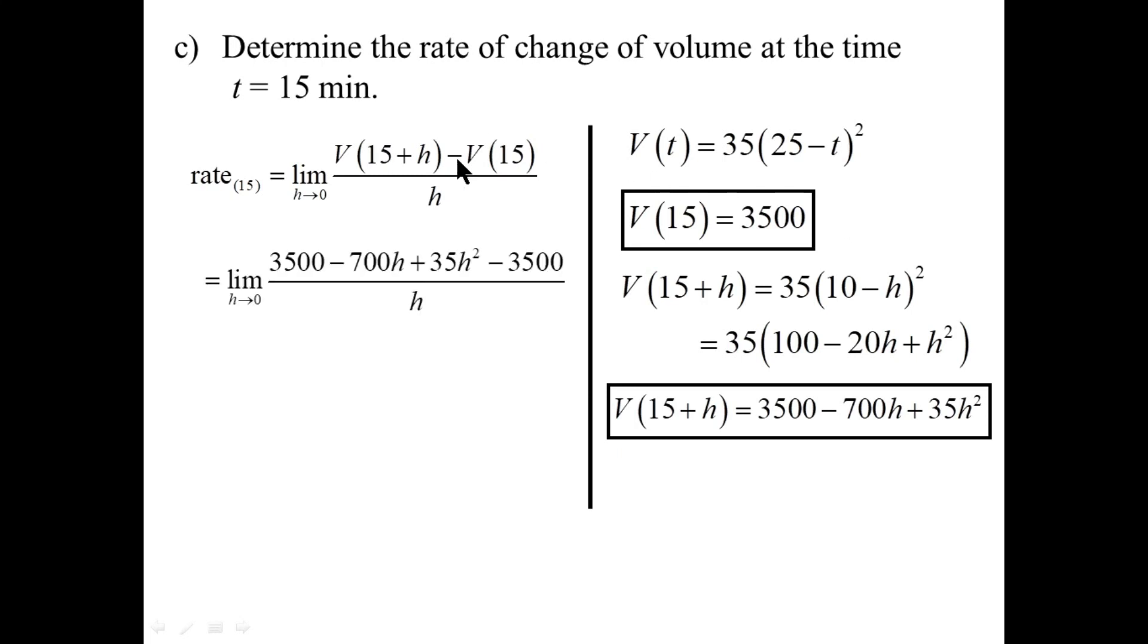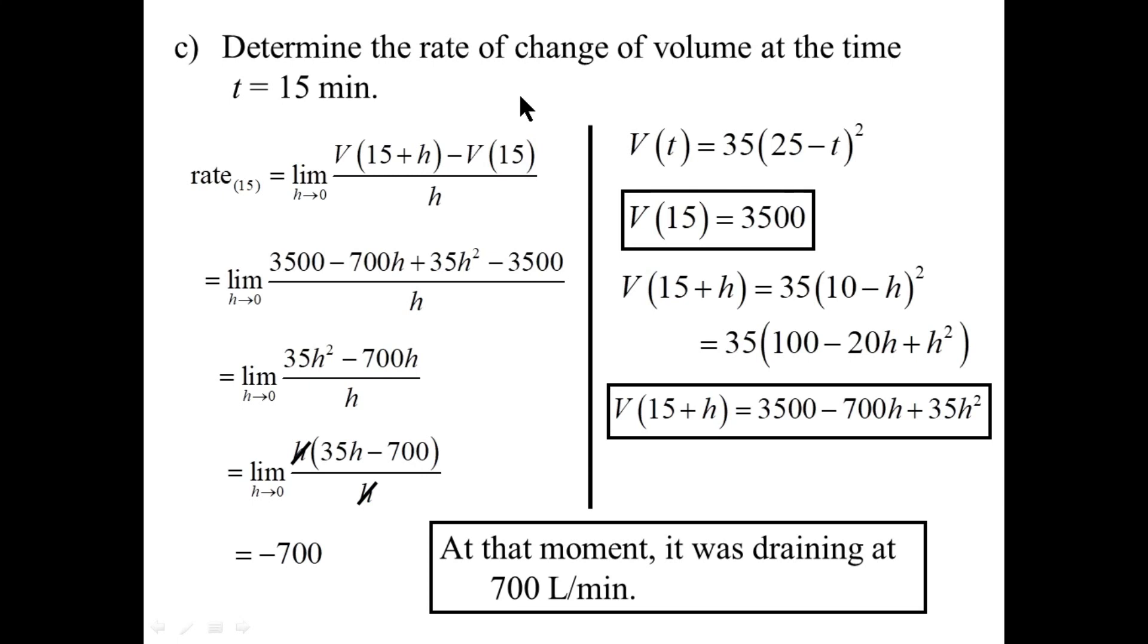Plugging them both in. Here and here. Collecting like terms. Factoring. Canceling where appropriate. Taking the limit. And we have at that moment, it was draining at 700 liters a minute. The negative sign is handled by the word draining.